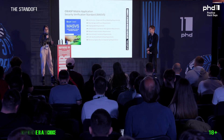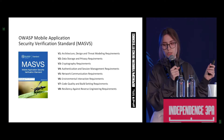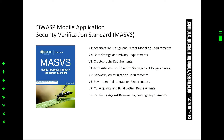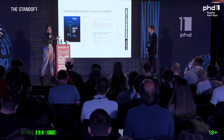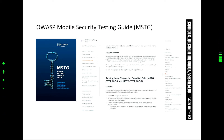OWASP also has a Mobile Application Security Verification Standard, which includes eight chapters, and each chapter has requirements which are sub-points. These are the requirements you need to comply with to be a safe mobile application. It works great with MSTG — the Mobile Security Testing Guide from OWASP — which gives greater detail, and I think it's good reading to dive into the topic.